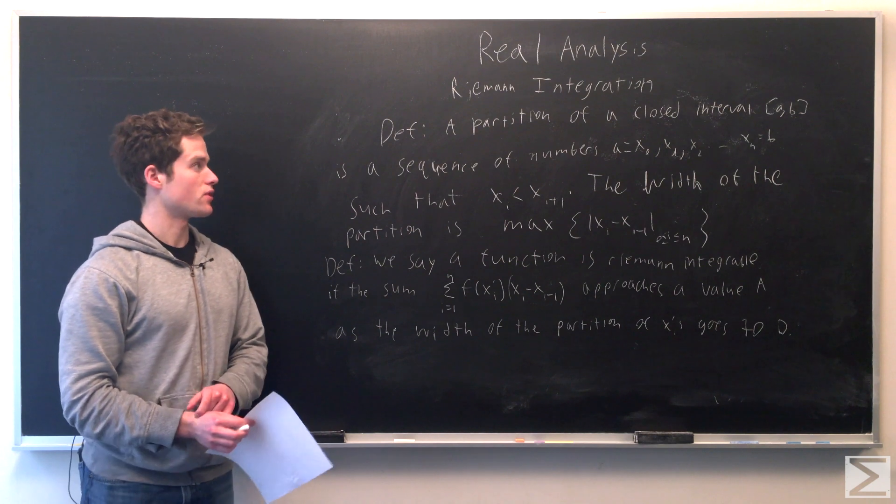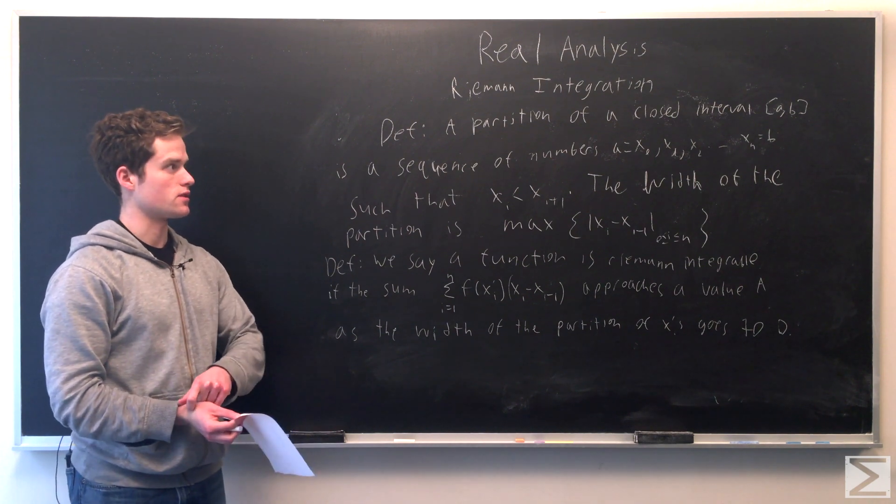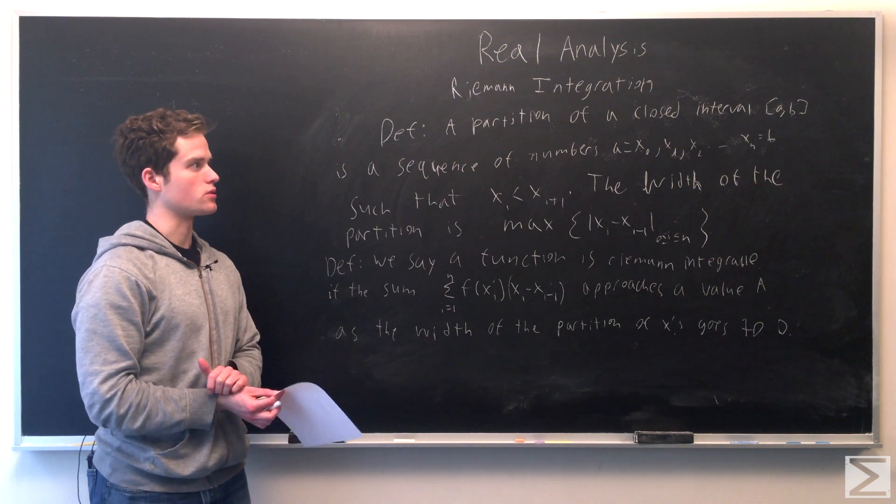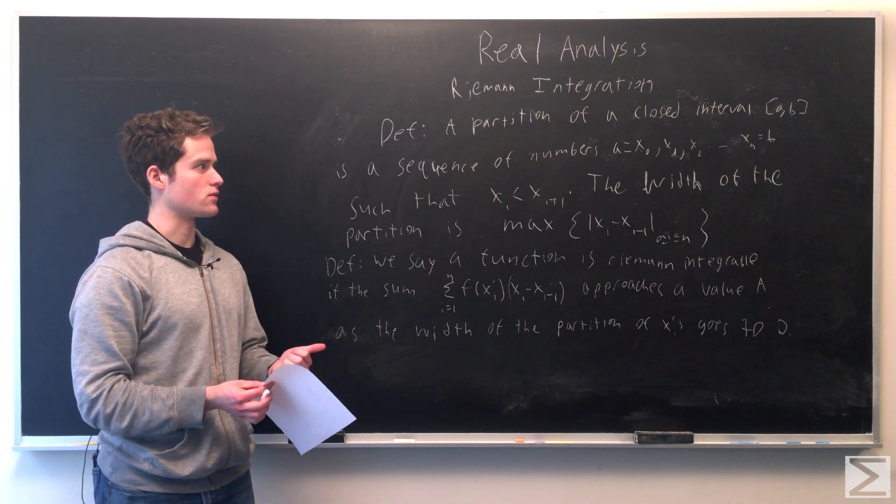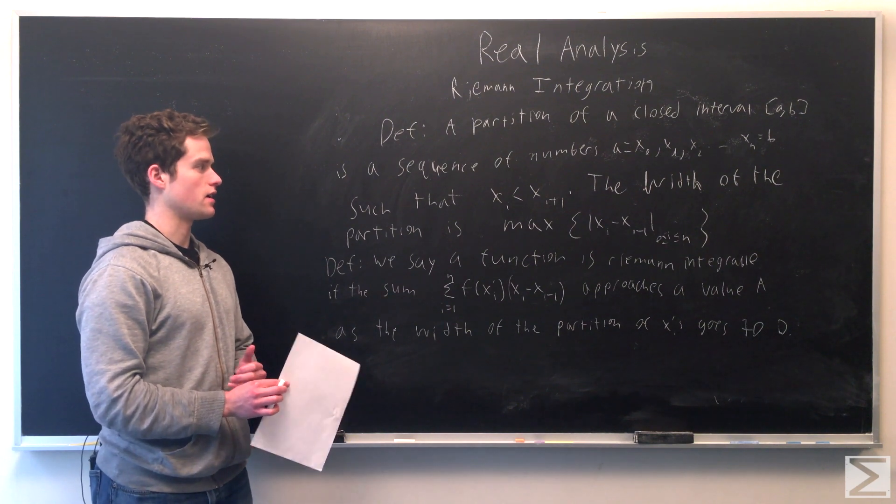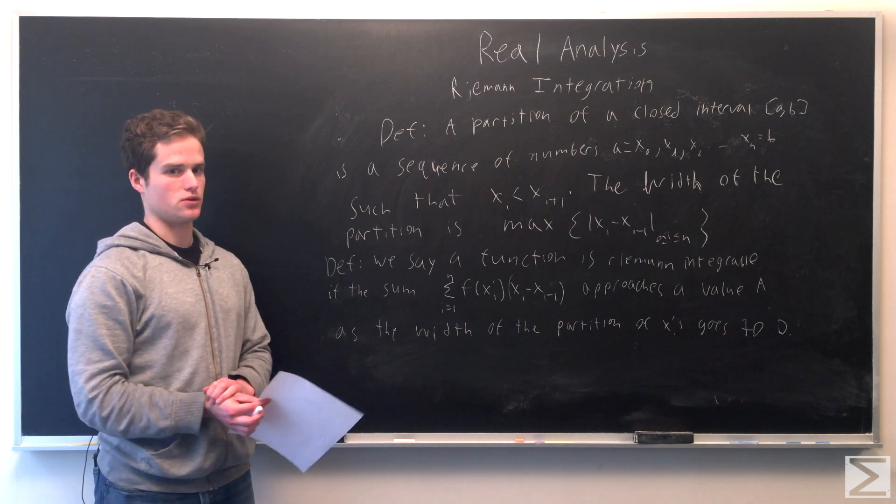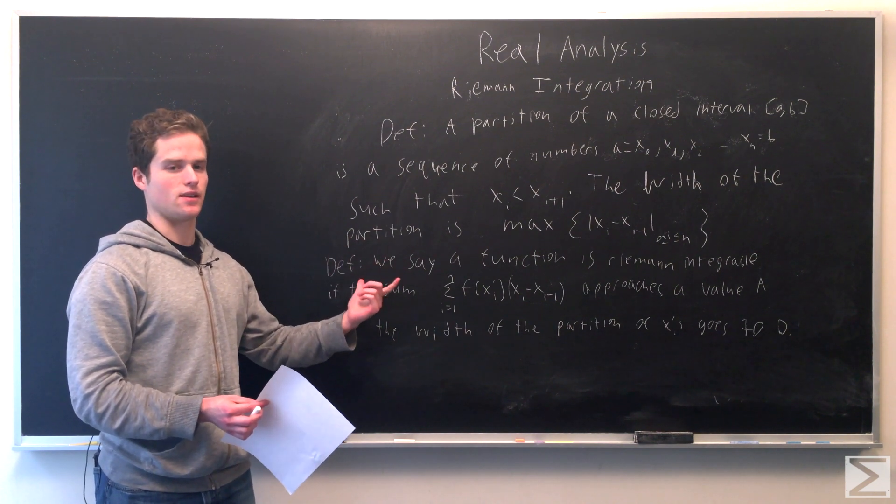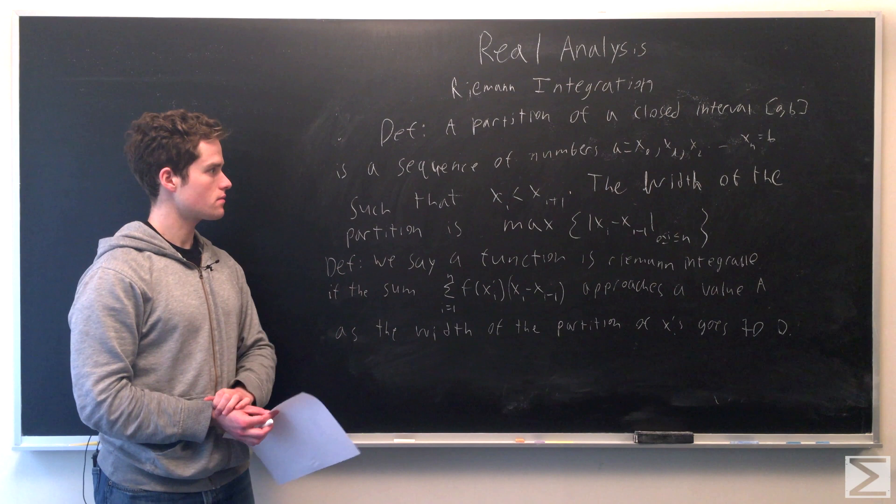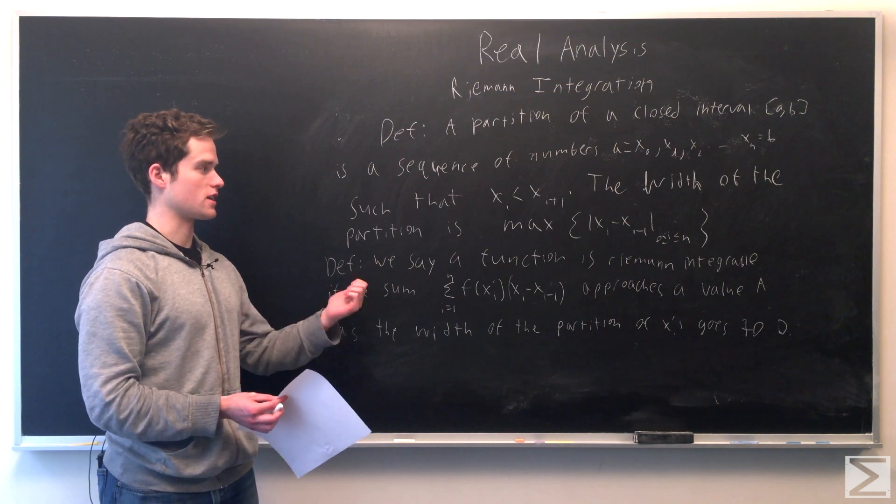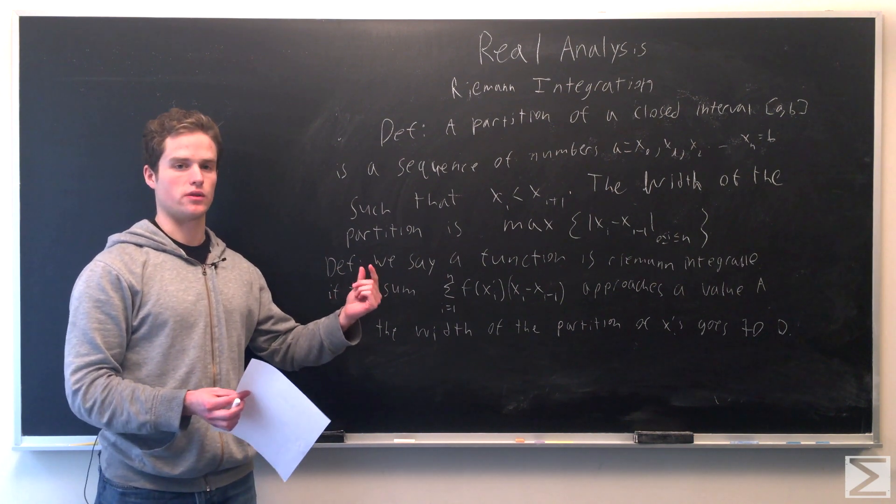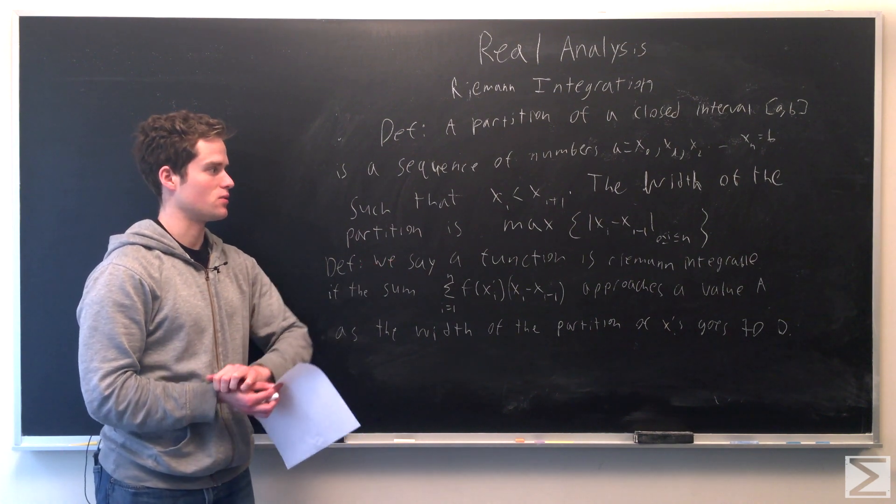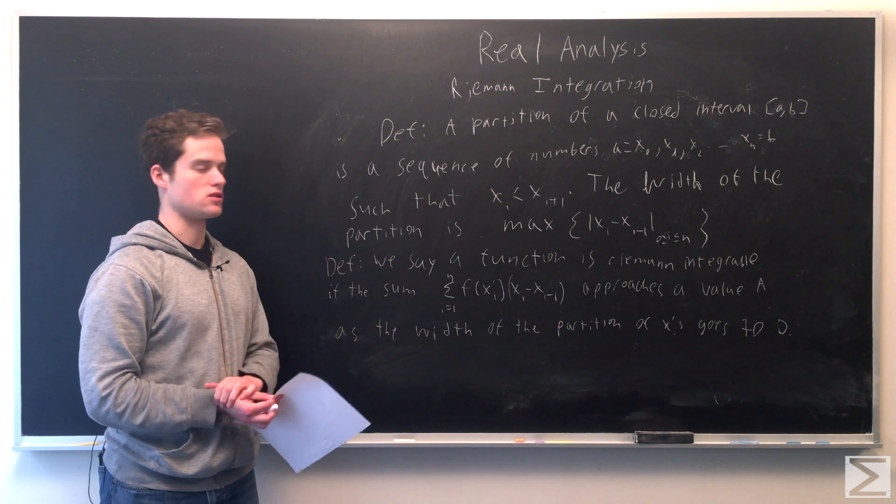First, we want to define a partition. We have some closed interval [a,b]. A partition is just a sequence of numbers where a equals x₀, b equals xₙ, and it's x₀, x₁, x₂, etc., such that xᵢ is strictly less than xᵢ₊₁. So it's just some sequence of numbers that are spread out over this closed interval [a,b]. The width will just be the maximum distance between any two adjacent numbers in the sequence: max |xᵢ - xᵢ₋₁| for i between 0 and n.